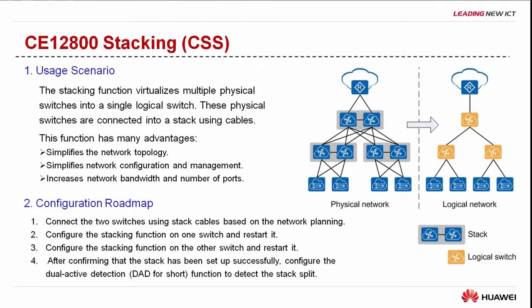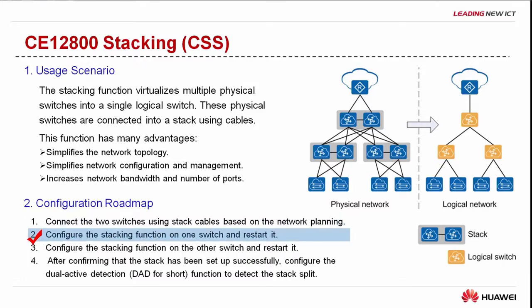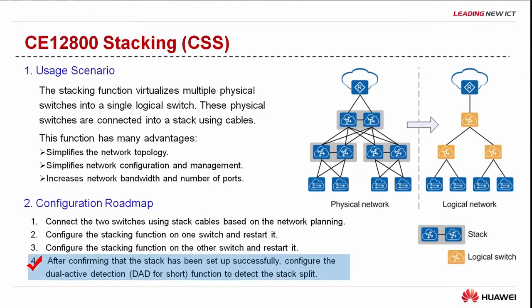The following introduces the roadmap of setting up a stack of two Cloud Engine 12800 switches. First, connect the two switches using stack cables based on the network planning. After the two switches are connected, configure the stacking function on one switch and restart it. Then configure the stacking function on the other switch and restart it. After confirming that the stack has been set up successfully, configure the DAD function to detect the stack split.